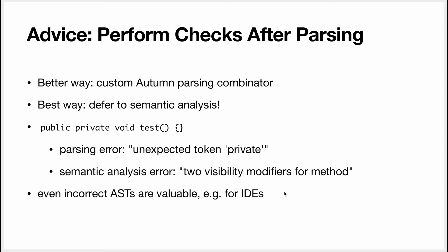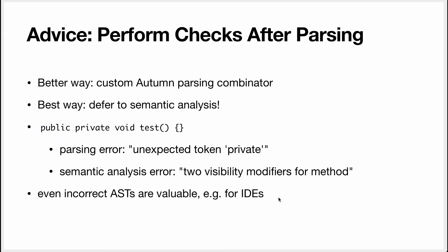Another reason you want to be lax in the parser and allow many things is that even incorrect ASTs are very valuable. A good example is when you are using an IDE. If you write something incorrect, it should still be able to resolve the test method, give you syntax highlighting, and let you jump to definition. But if it doesn't parse at all, this is very difficult to do — it needs a parse tree to implement all these features. IDEs like IntelliJ actually have very specific parsers designed to be very permissive. They allow much worse mistakes — mismatched blocks and things like that — and also try to use the previous version of the code to fix the current AST.